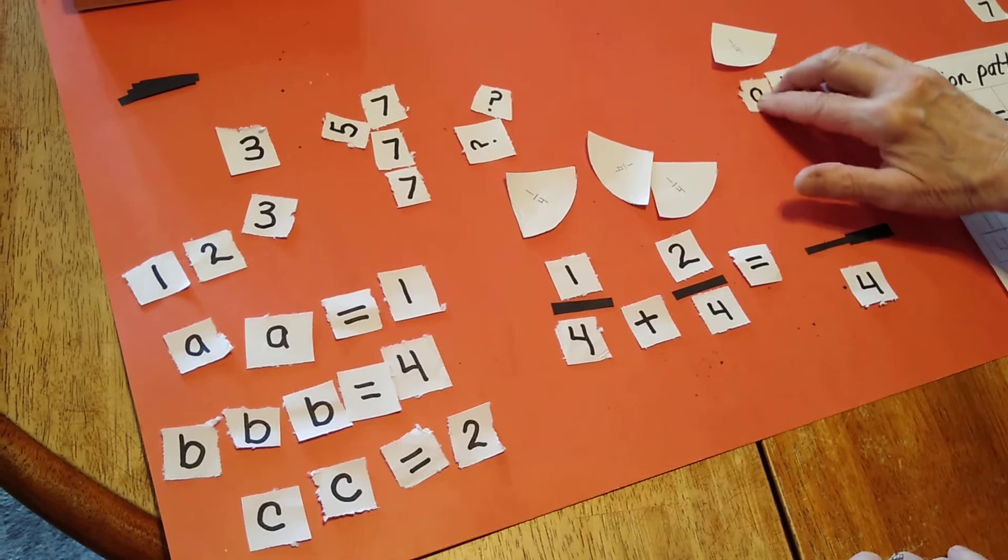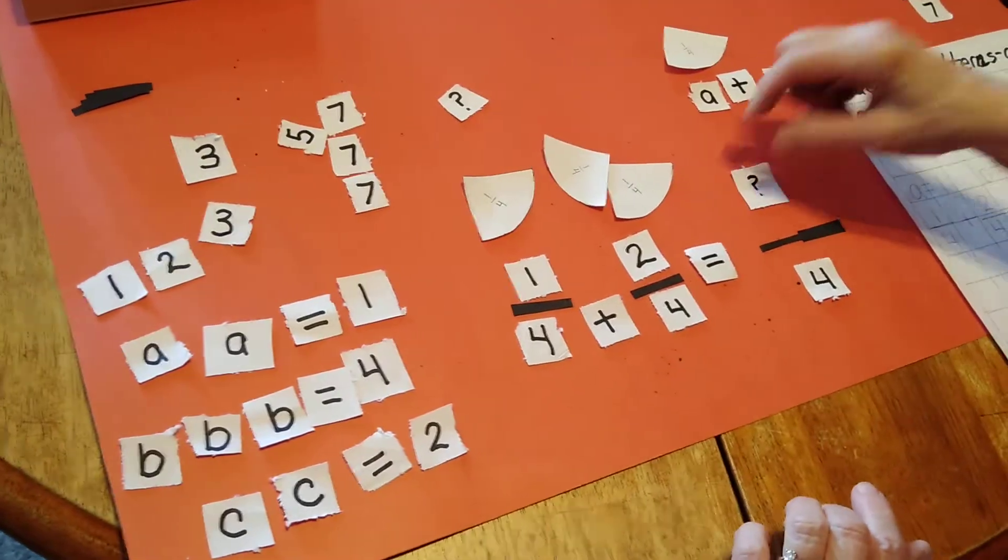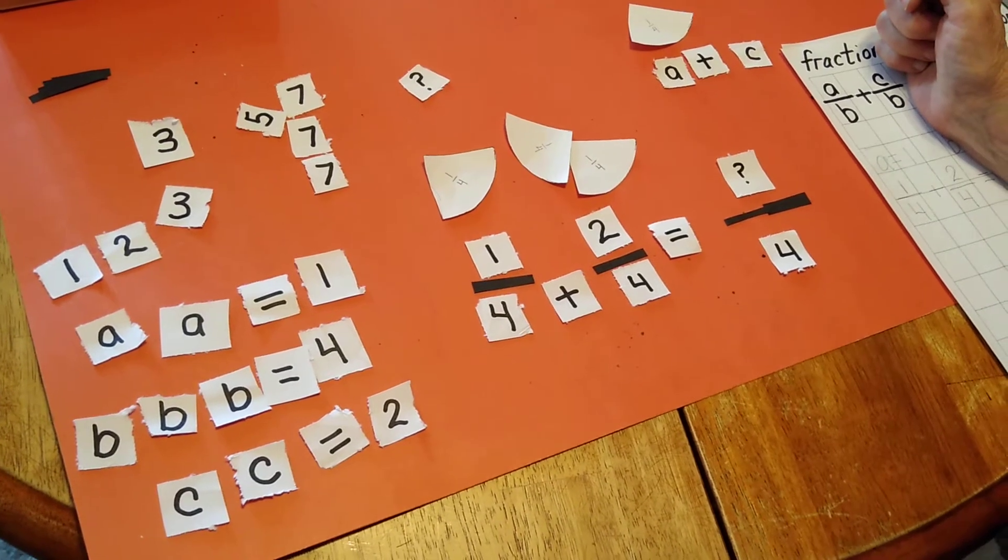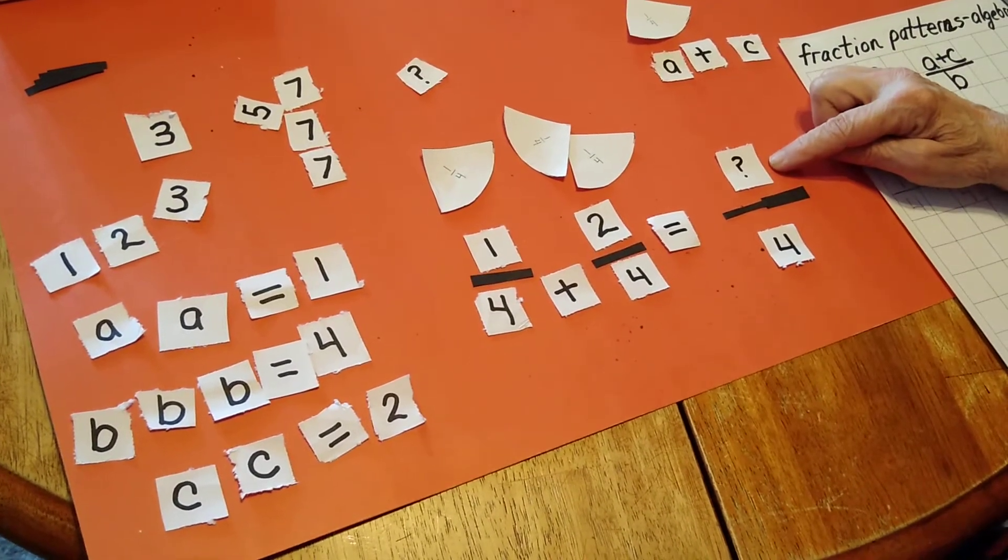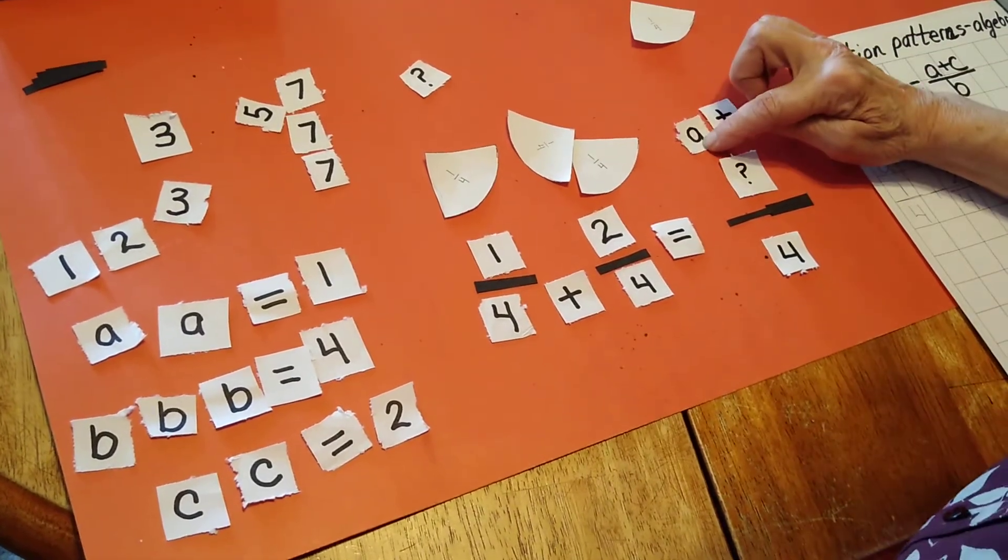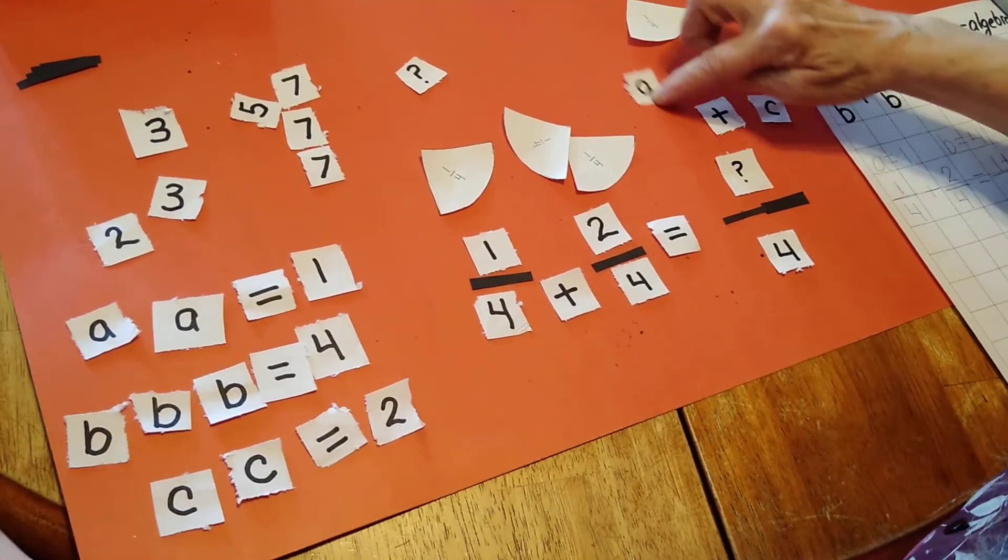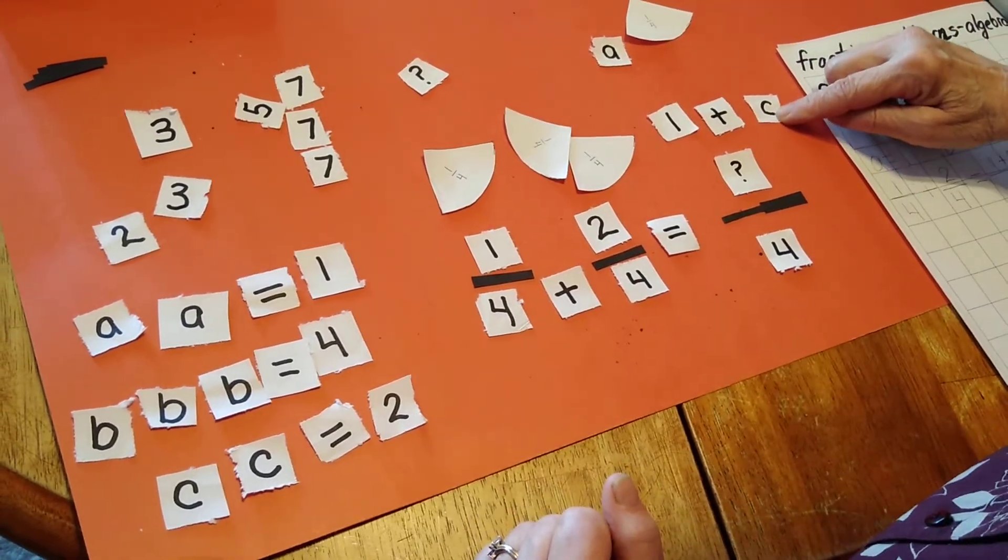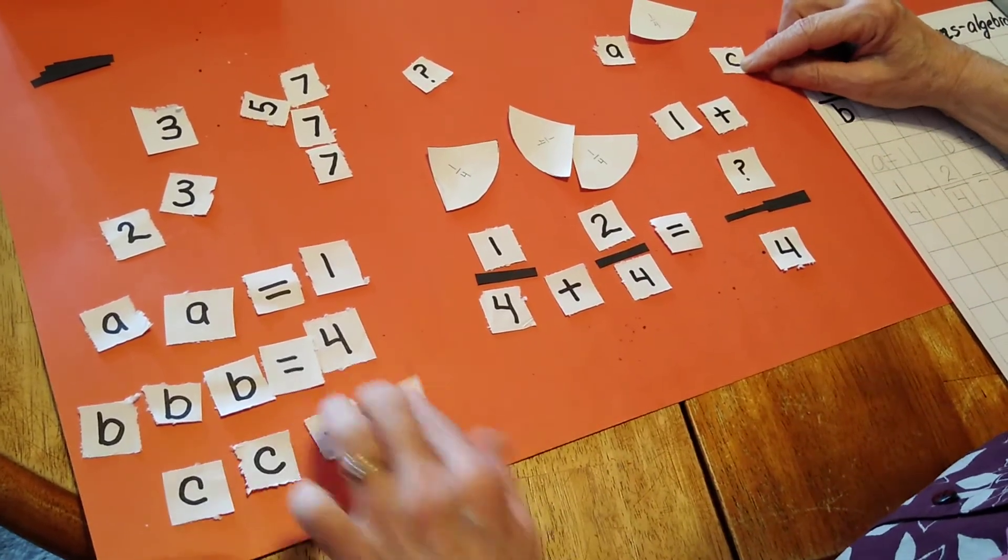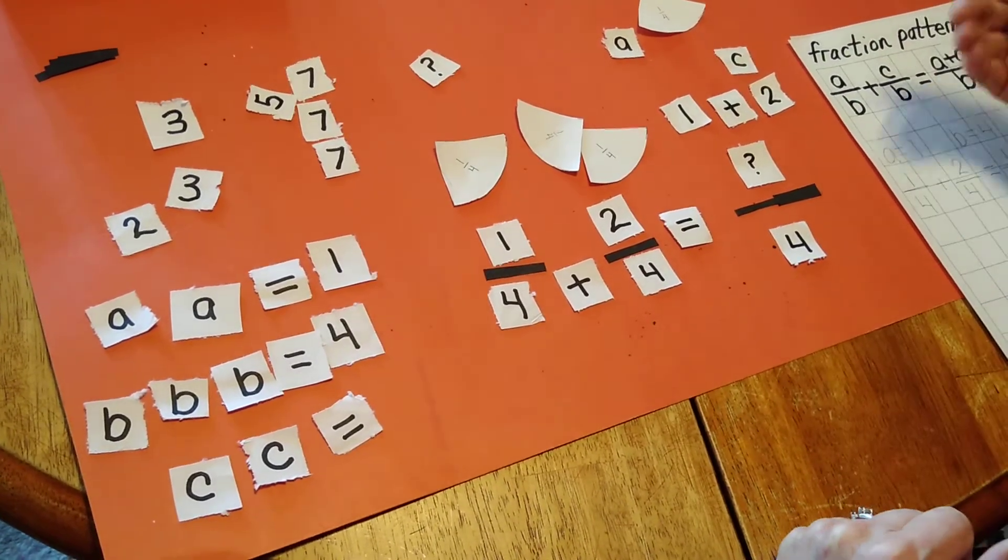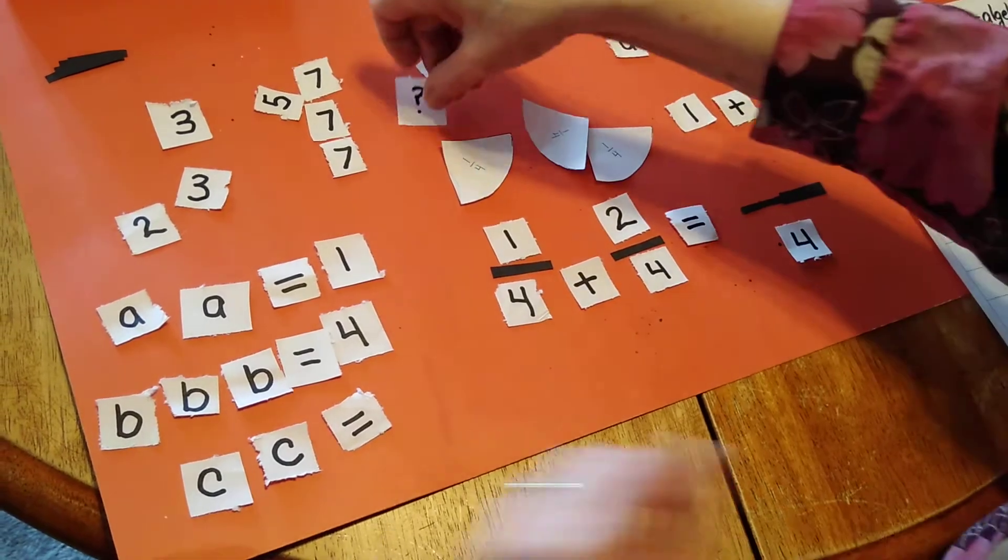My question was, how many pieces did I have all together? The answer to this problem is right here. I fill in my A with a one. I fill in my C with a two. And my answer, one plus two equals three.